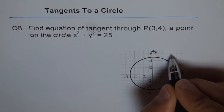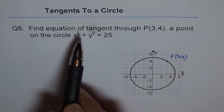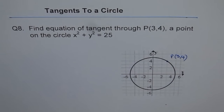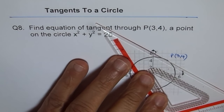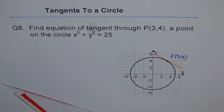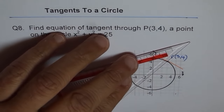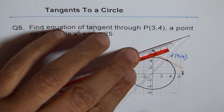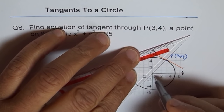So that's the point given to us — let's say this point is (3, 4). We have to find the equation of the tangent through this point. So let's draw a tangent line to this point. We will use the property of a tangent to a circle: if we draw the radius at this point, then the radius and the tangent are perpendicular.